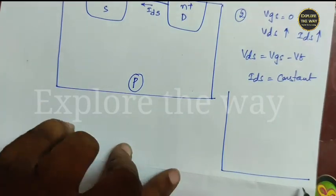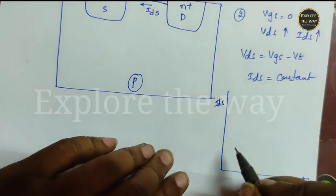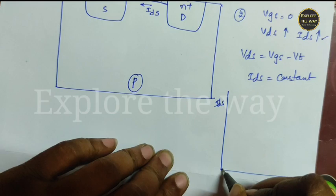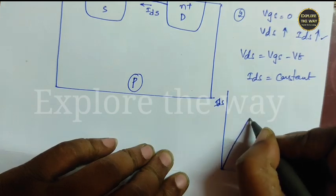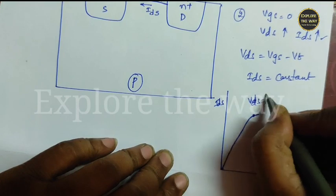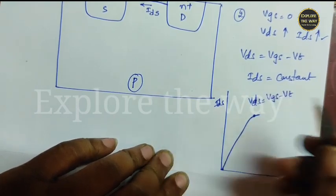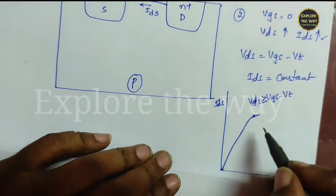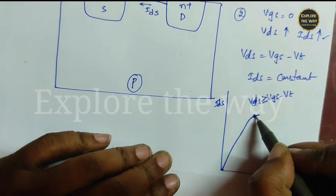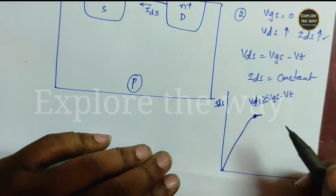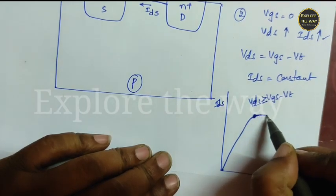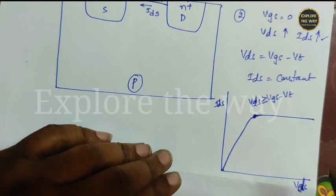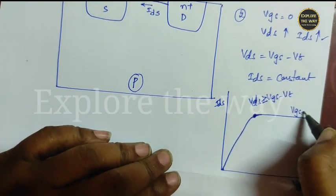This region of operation is like this. As VDS increases, IDS gets increased. Even when VDS is equal to 0, at the point when VDS is equal to VGS minus VT and above that, that means when VDS is greater than or equal to VGS minus VT, it reaches its maximum current. And after that, even when VDS increases, ID becomes constant. This characteristic is same as enhancement mode transistor. This is the case when VGS is equal to 0.